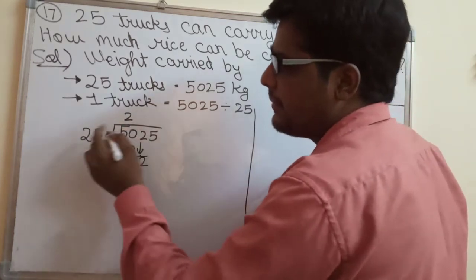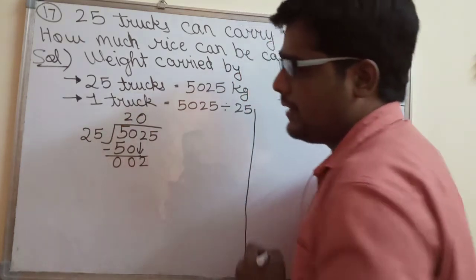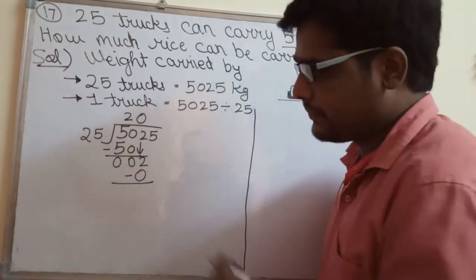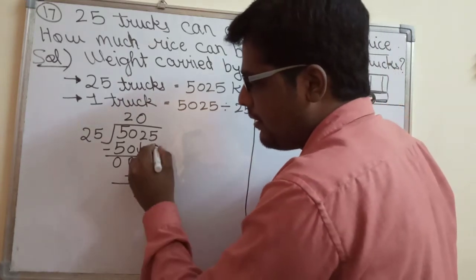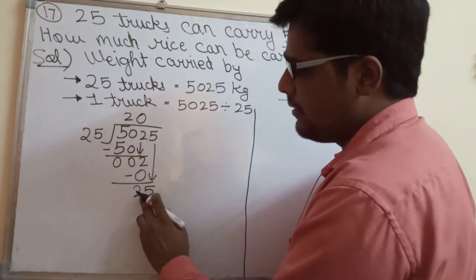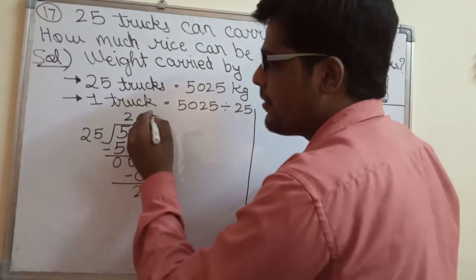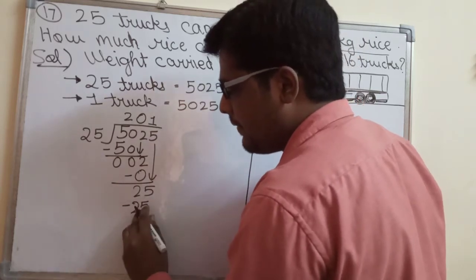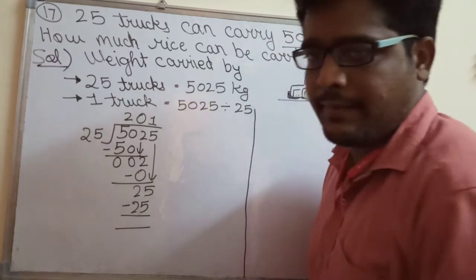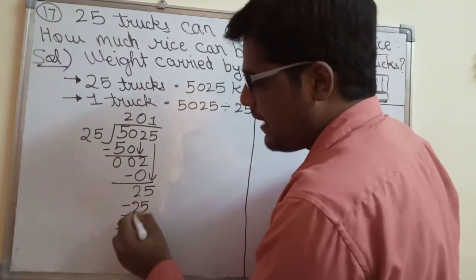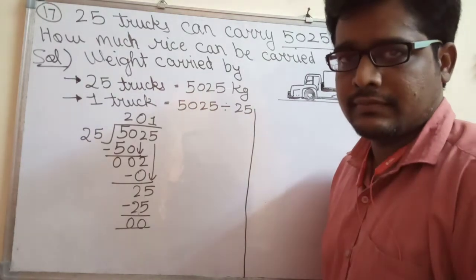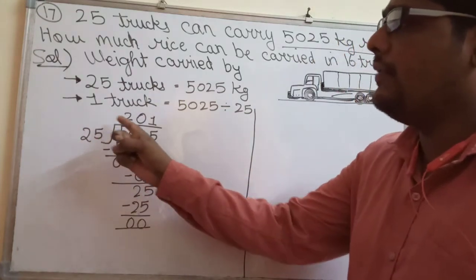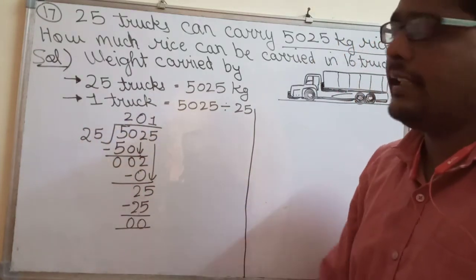We brought 2 down, but 2 is smaller than 25. So what do we do? We put a 0 in the quotient. 25 zeros are 0. Put 0 here. 2 minus 0 gives 2. Now bring the 5 down — it becomes 25. So 25 ones are 25. Now subtract: 5 minus 5 is 0, and 2 minus 2 is 0. We have completed the division. So one truck will carry 201 kg.